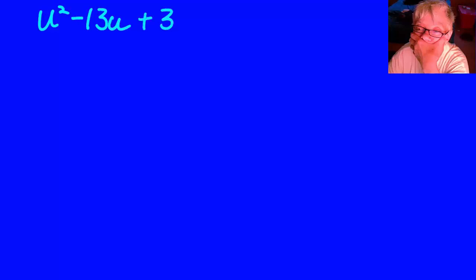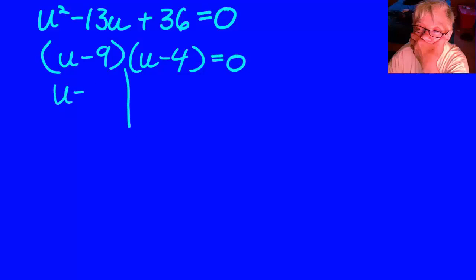You can solve this one by factoring, and that's the way I did it. But you can use the quadratic formula. You can even use completing the square, whatever method you like the best. I factored this into u minus 9 times u minus 4, set equals 0, and then I separately set each factor equal to 0.